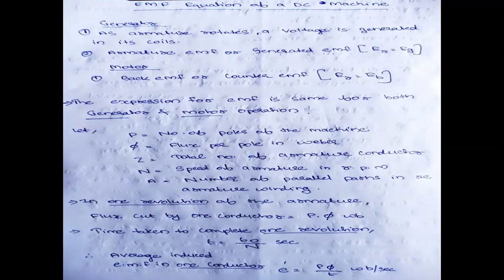In one revolution of the armature, the flux cut by one conductor will be P × phi Weber, since flux per pole is phi and there are P poles. So in one rotation the flux cut by one conductor is P × phi Weber. The time taken to complete one revolution will be 60/N seconds.